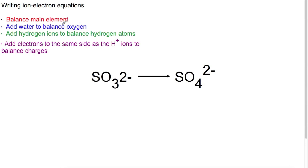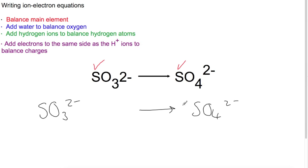Let's look at an example: sulfite ions SO₃²⁻ becoming sulfate ions SO₄²⁻. Step one — the sulfur is already balanced. Step two — there is one more oxygen on the right, so we add H₂O on the left. Step three — we have introduced two hydrogen atoms, so we add 2H⁺ on the right.